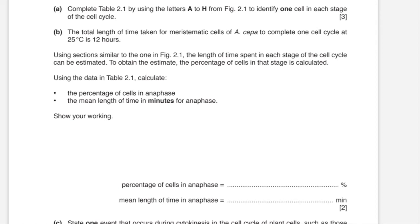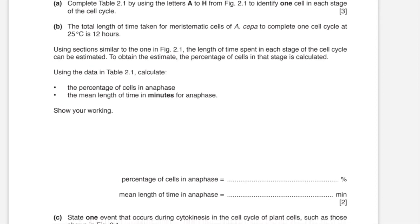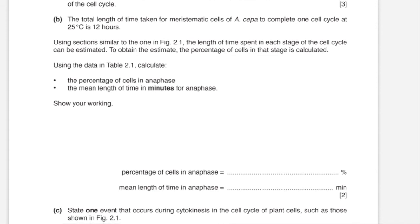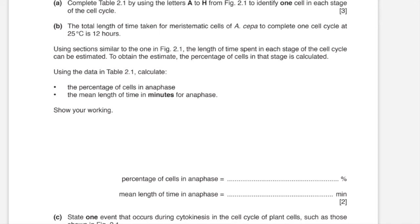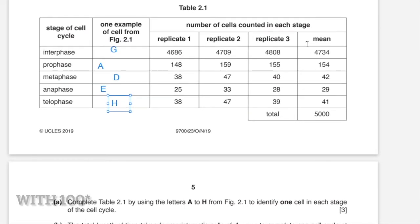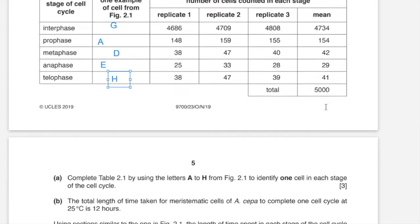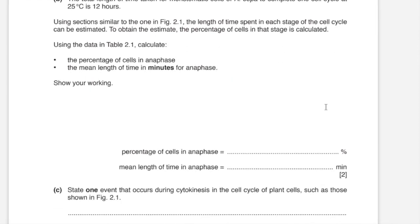B: the total length of time taken for meristematic cells to complete one cycle at 25 degrees Celsius is 12 hours. Using sections similar to figure 2.1, the length of time spent in each stage can be estimated — the percentage of cells in that stage is calculated. Using table 2.1, calculate the percentage of cells in anaphase and the mean length of time in minutes for anaphase. To calculate the percentage of cells in anaphase, divide the number of cells in anaphase by the total number of cells and multiply by 100. For anaphase, that would be 29 divided by 5000 multiplied by 100, giving 0.58% of total cells.